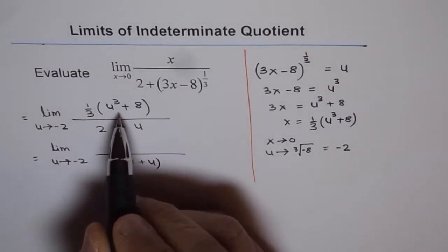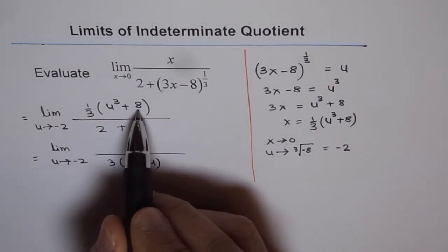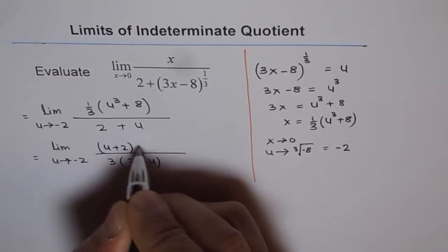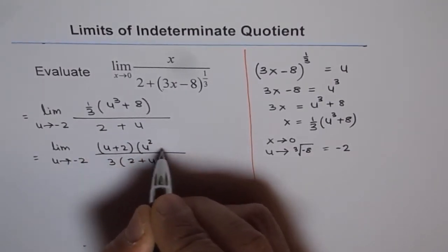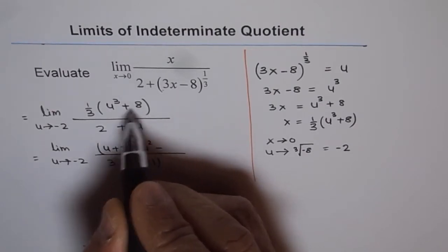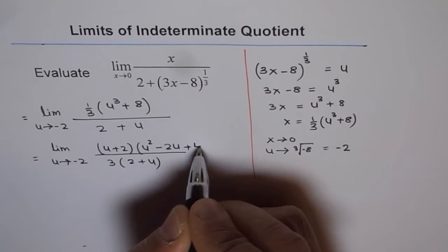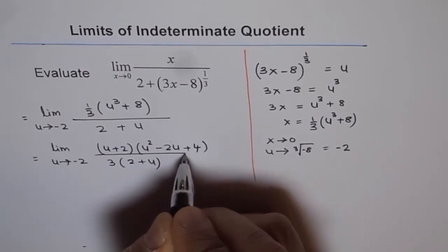And we can factor a cube plus b cube, 2 cube as u plus 2 times u square minus 2u plus 4 square, or 2 square, which gives us 4.